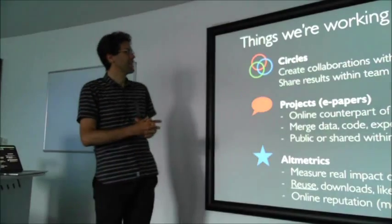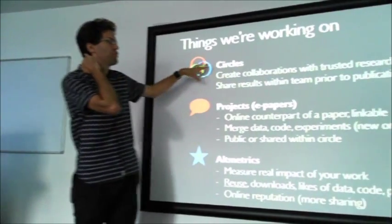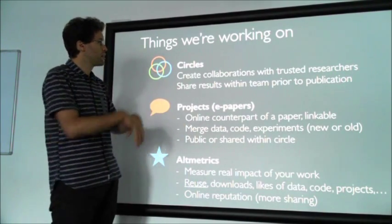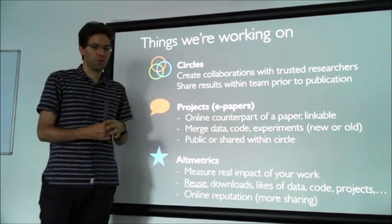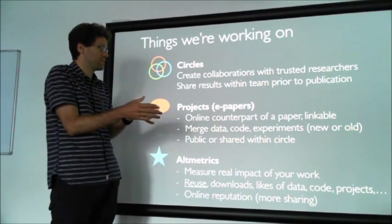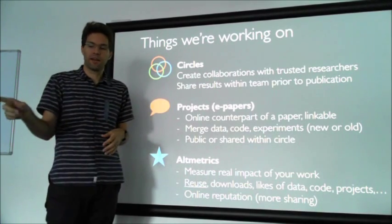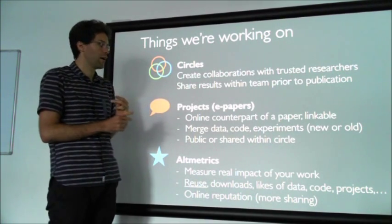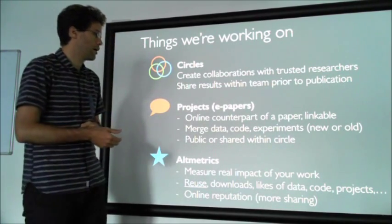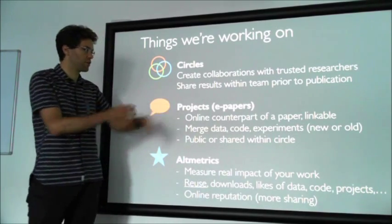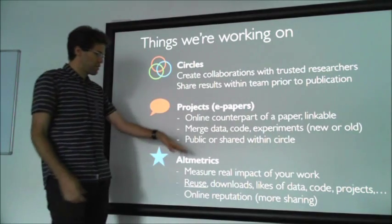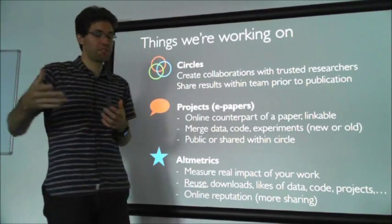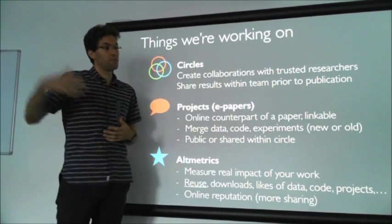What we're working on right now is circles — being able to work on a problem with a group of scientists, maybe with sensitive data you don't want to share just yet. Projects are a way to group data into a project, which is basically an electronic paper. So if you write a scientific paper, you can put a link in there pointing to a web page with all the code, all your data, all the experiments and details — and vice versa, you can link this e-paper to your published paper to count how many people look at it. We will also measure what the impact is of your work — how much people reuse your data, and how much of that research ends up being published.